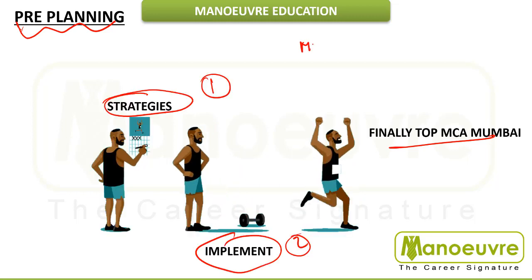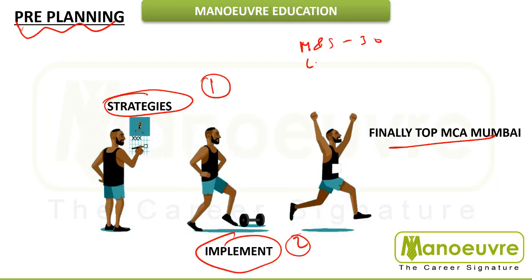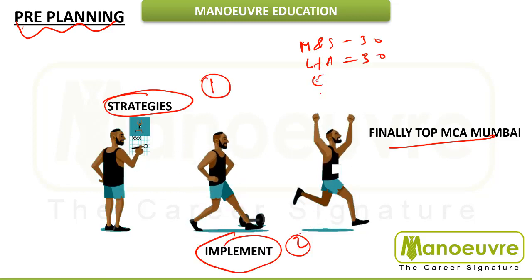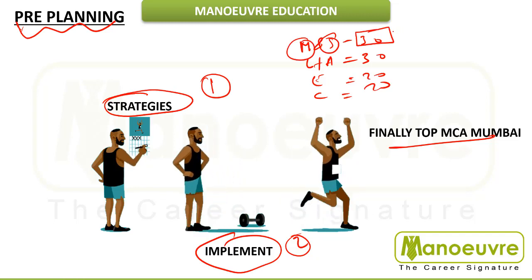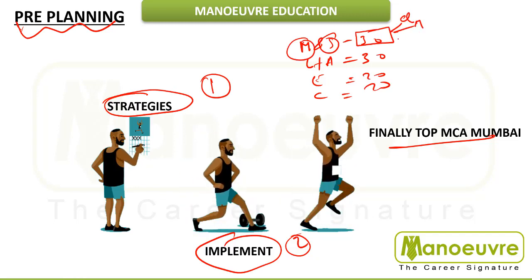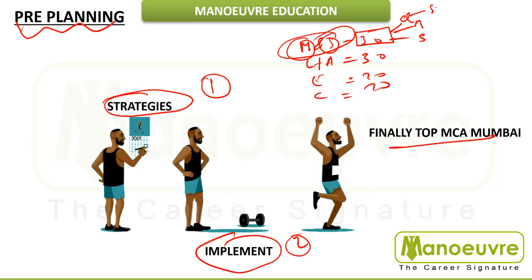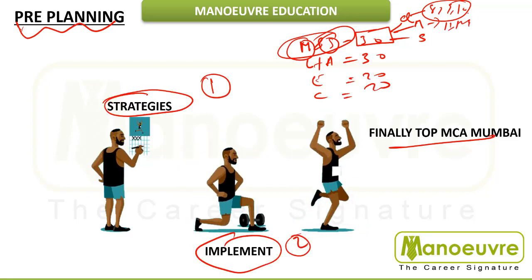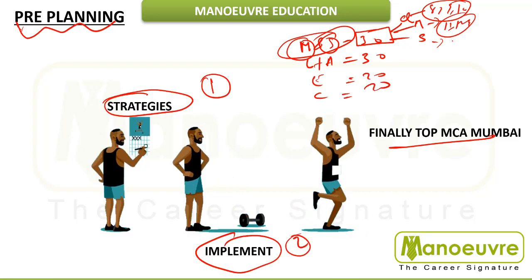As we all know, we have Mathematics along with Statistics — 30 questions. Then we have Logical Reasoning plus Abstract Reasoning — 30 questions, and English and Computer — 20 questions each. You need to understand your Quant, Mathematics and Statistics. In these, the section is divided: Quant covers 8th, 9th, and 10th standard maths; Maths covers 11th and 12th standard maths; and Statistics covers probability, permutation, combination and related topics.